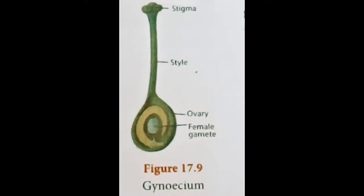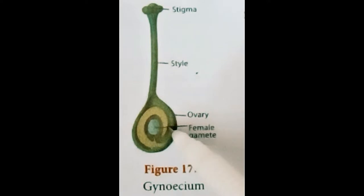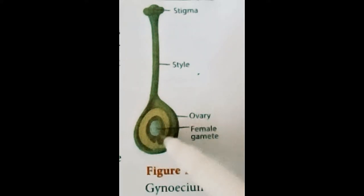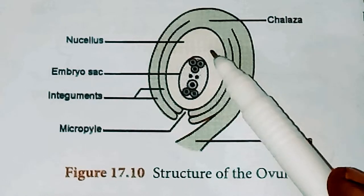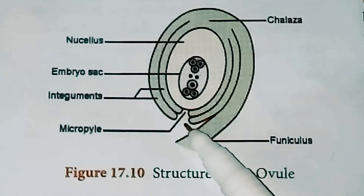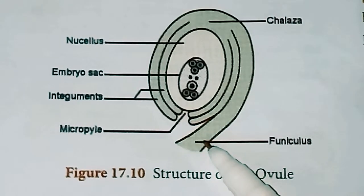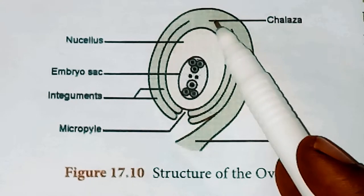Learn the structure of the gynoecium. The gynoecium is the female part of the flower, made up of carpels. It consists of three parts: the ovary — the bottommost part — continuing as a stalk-like style, ending with the stigma which is sticky. The ovary contains ovules in it, which become the seeds. The main part of the ovule is the nucellus, enclosed by two integuments leaving an opening called the micropyle. The ovule is attached to the ovary wall by a stalk called the funiculus. The part opposite to the micropyle is called the chalaza, which forms the basal part.